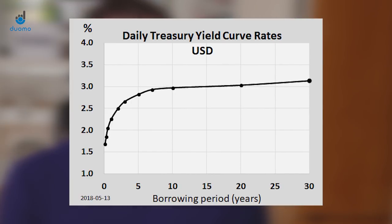The different maturities of bonds have different yields associated with them. Typically, the longer the maturity, the higher the yield is going to be, because of time-associated risks — for example, the risk that higher inflation could lead to the value of payments decreasing in real terms. This means that when you plot these yields against different maturities on a chart, it looks like a curve shape. And this is known as the yield curve.